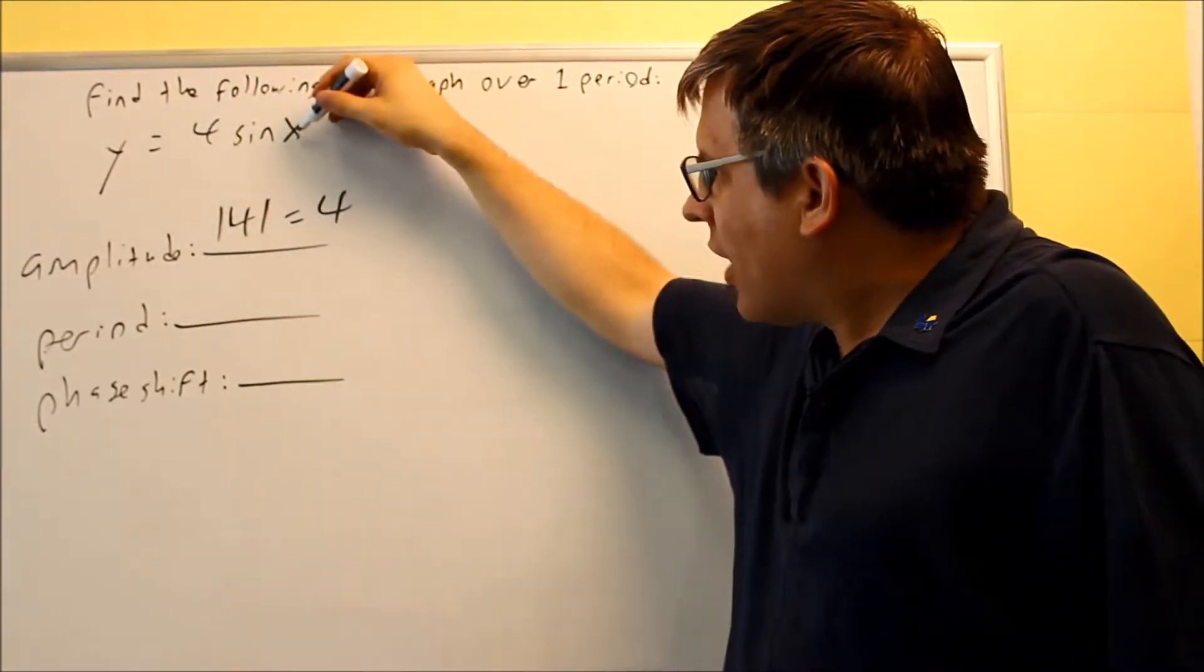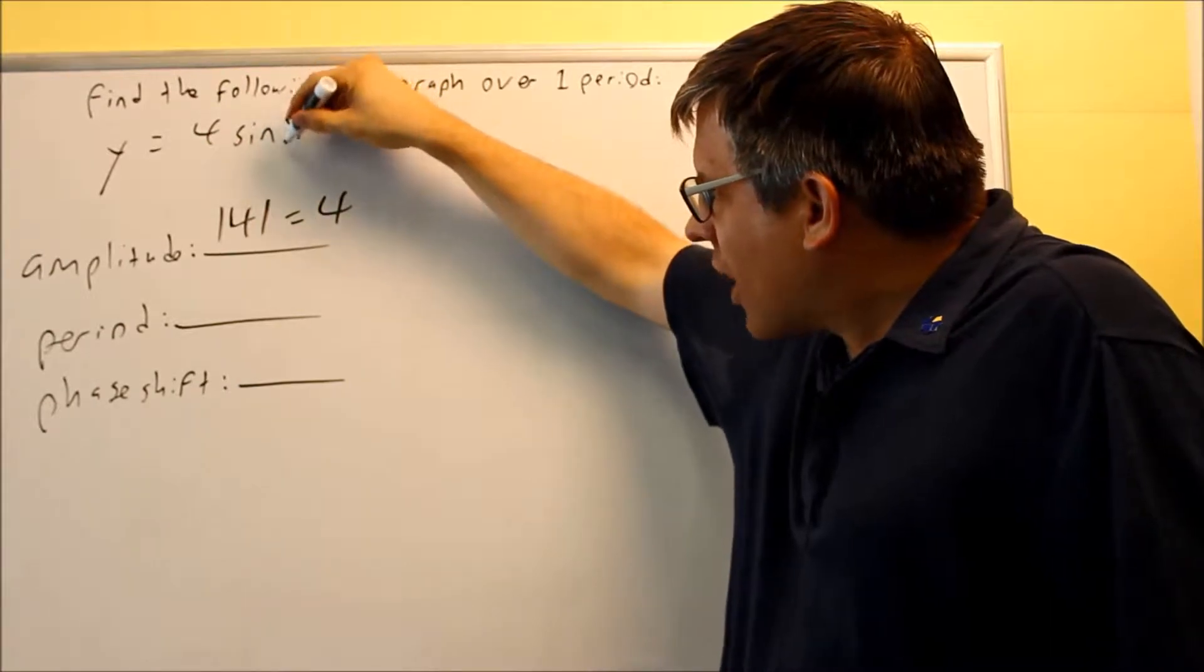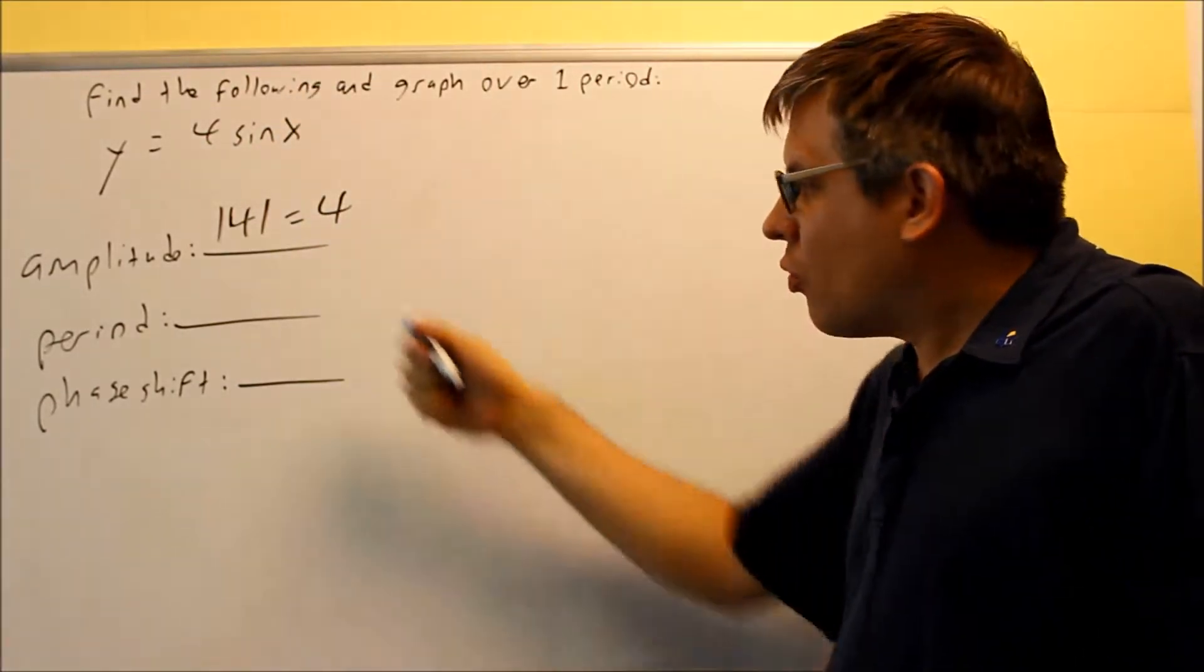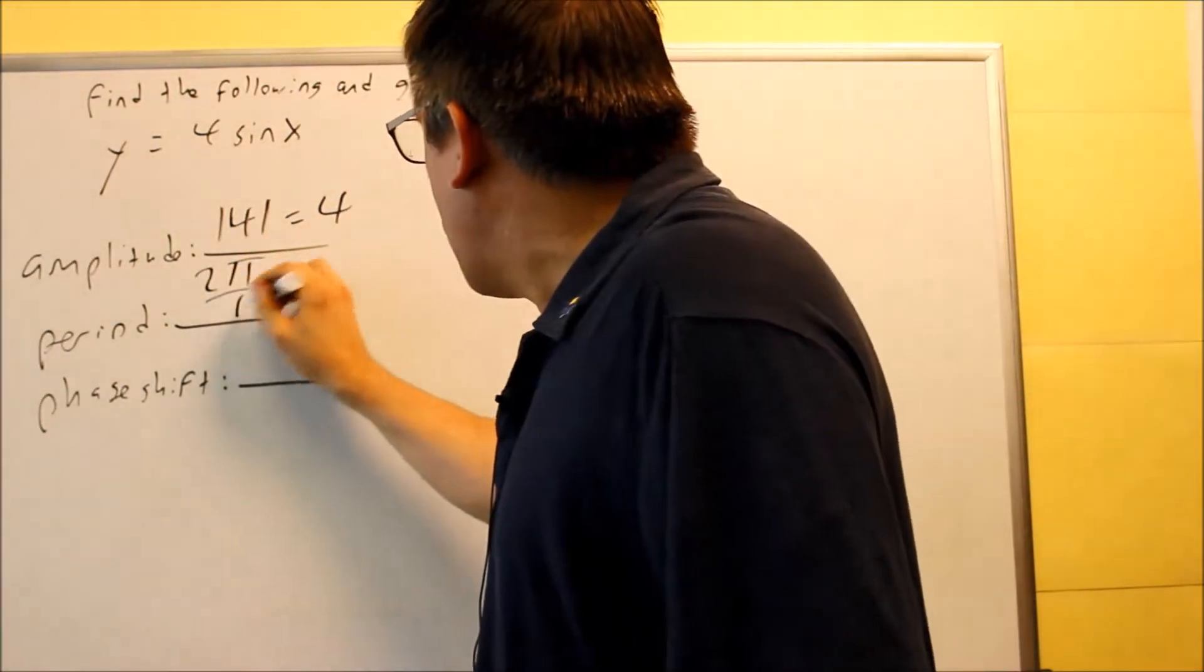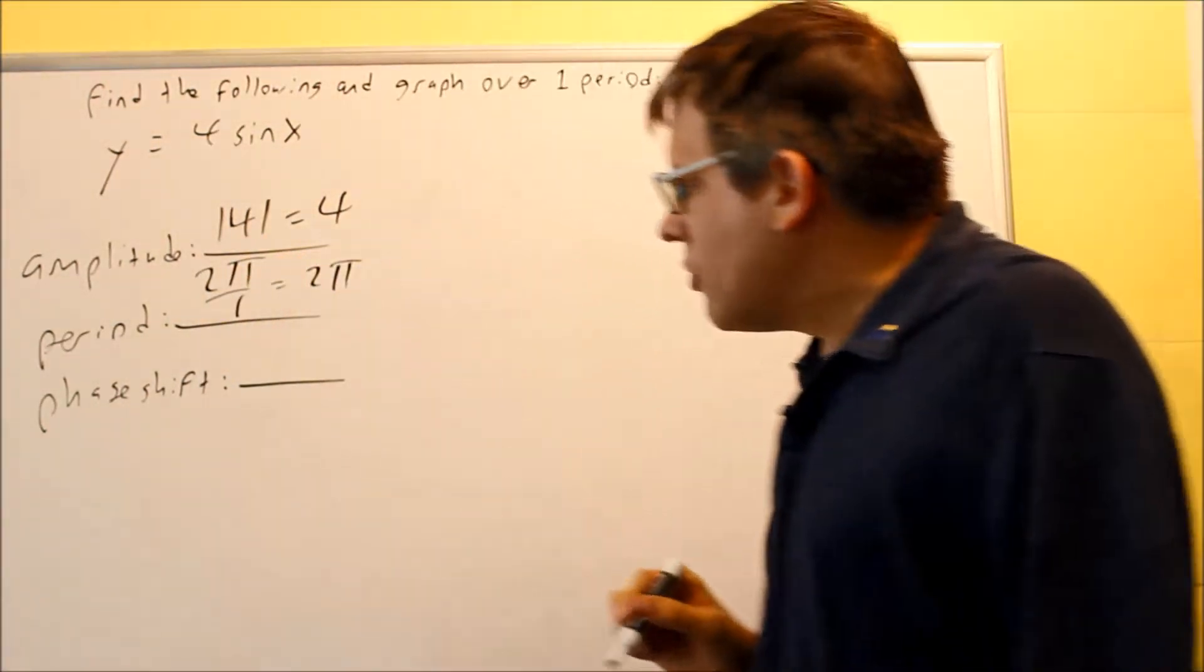This is our a value, and your b value in this problem, there's actually a 1 in front of the x, so when you want to do period, that's 2 pi over b. That's 2 pi divided by 1, and we get 2 pi.